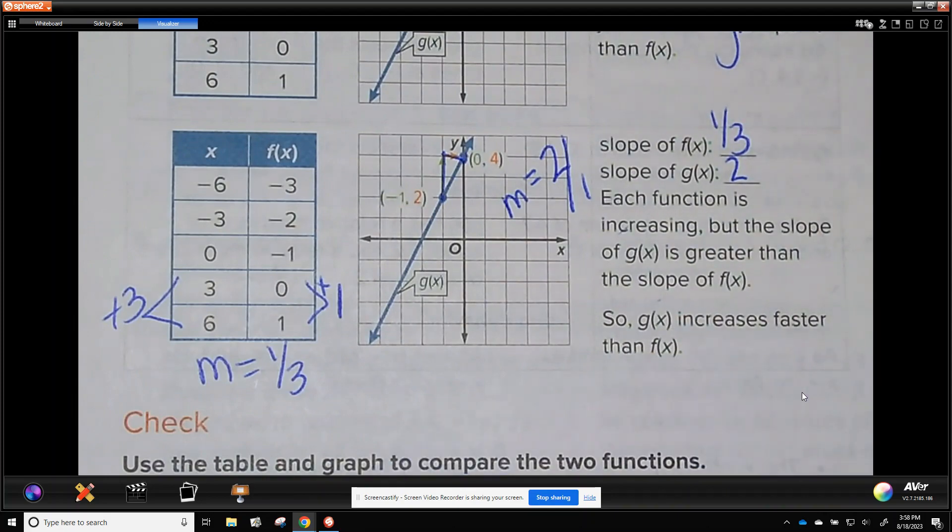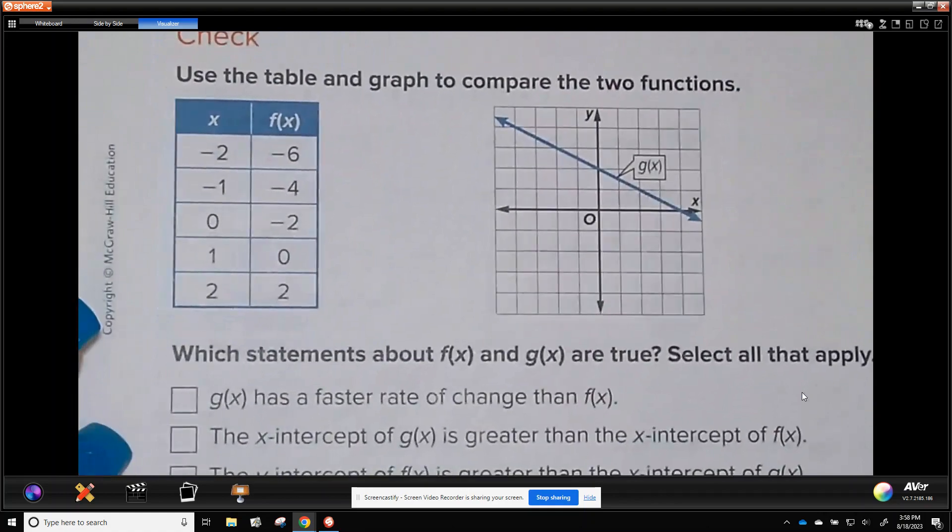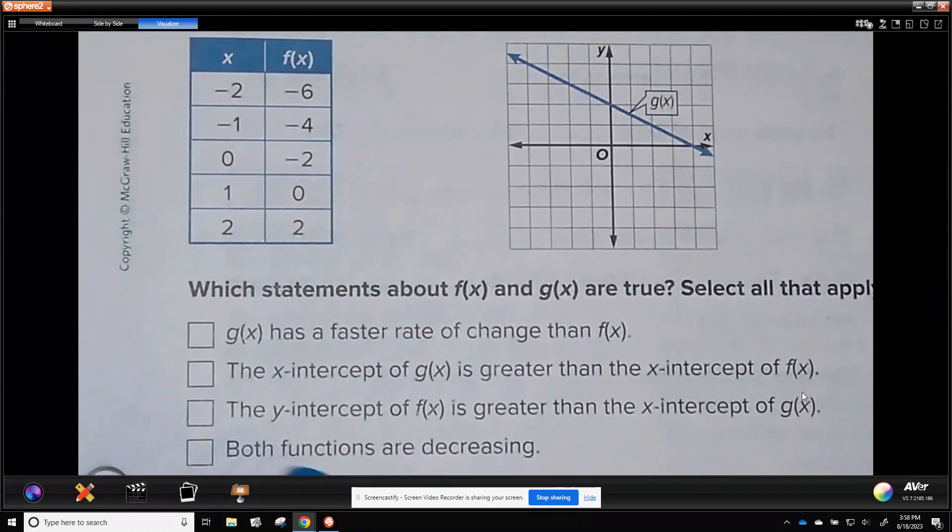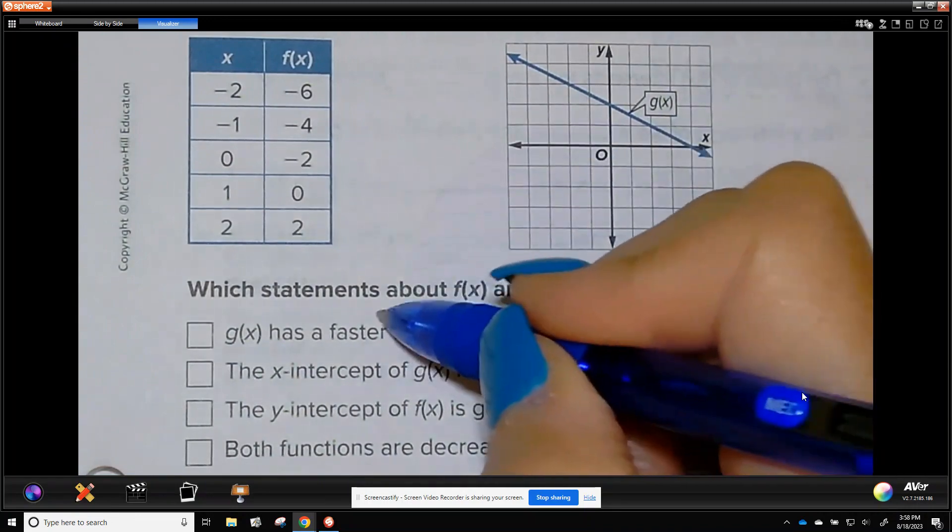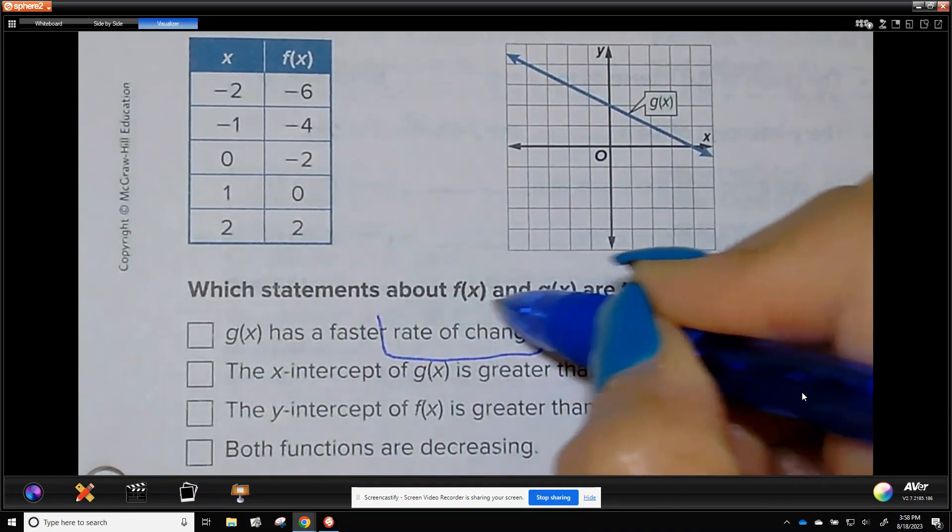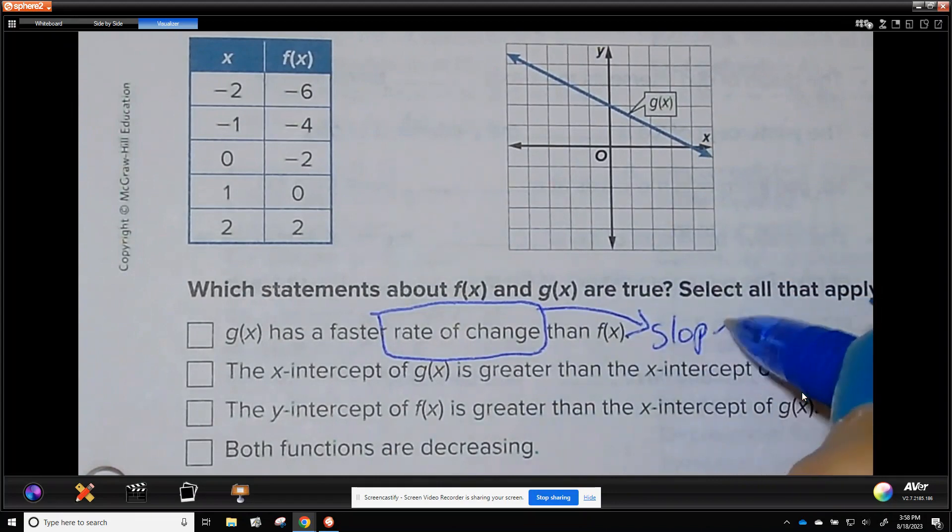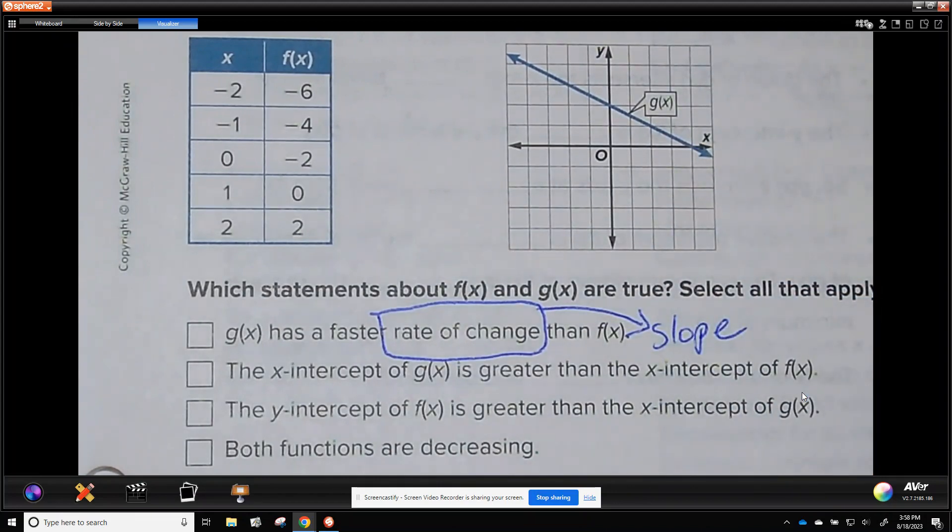Now let's look at these two and compare two functions. Right here, rate of change. These are both linear. Rate of change is slope. But we usually don't say slope unless it is linear. So that's a new word.